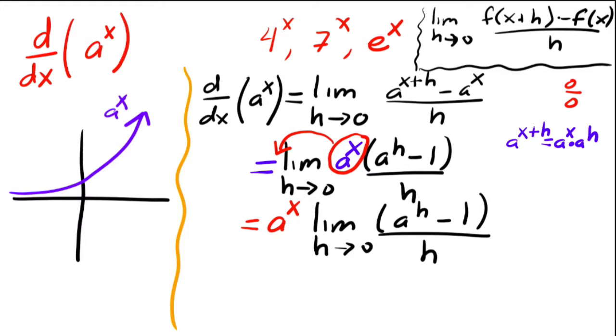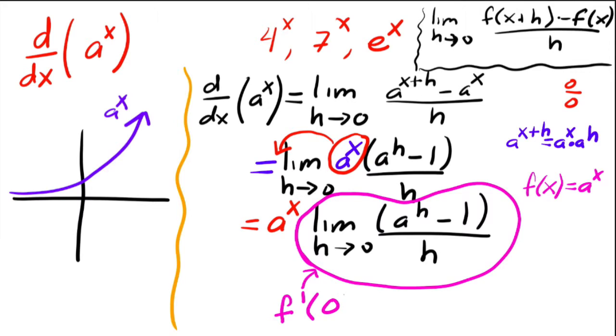Okay. Now, this guy, our problem is we need to find this guy right here. And one thing to notice is that this guy right here, so if my function f of x is a to the x, notice that this guy right here is equal to the derivative at zero. So this guy is a constant. This guy is just the derivative at zero. So notice if you use the definition for x equals zero of this function, you would get exactly that.